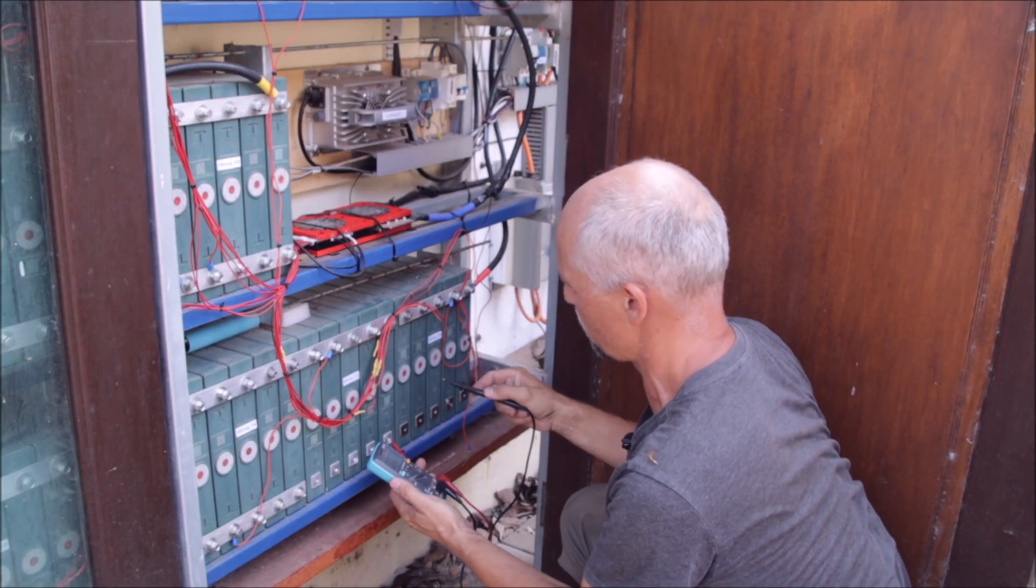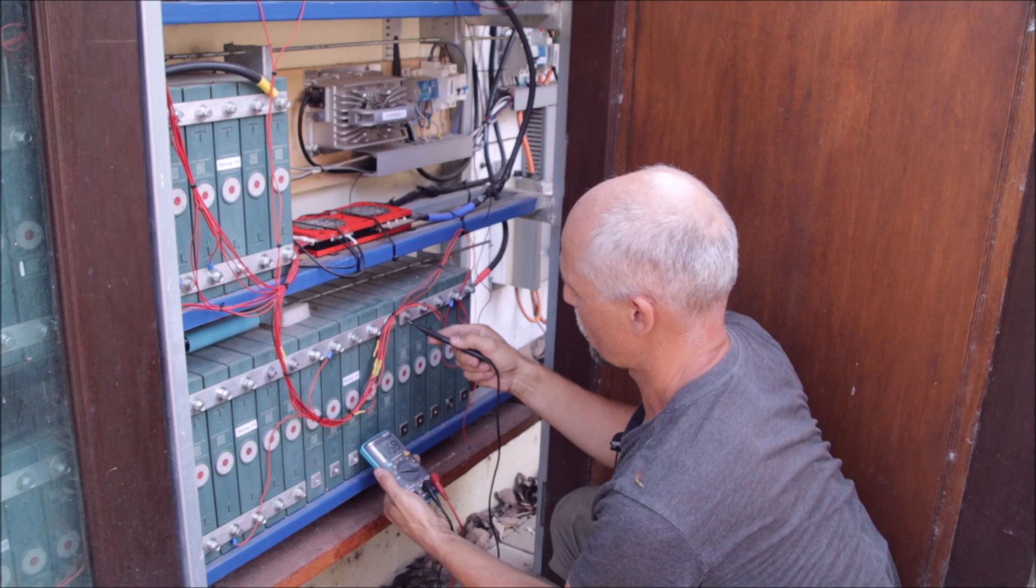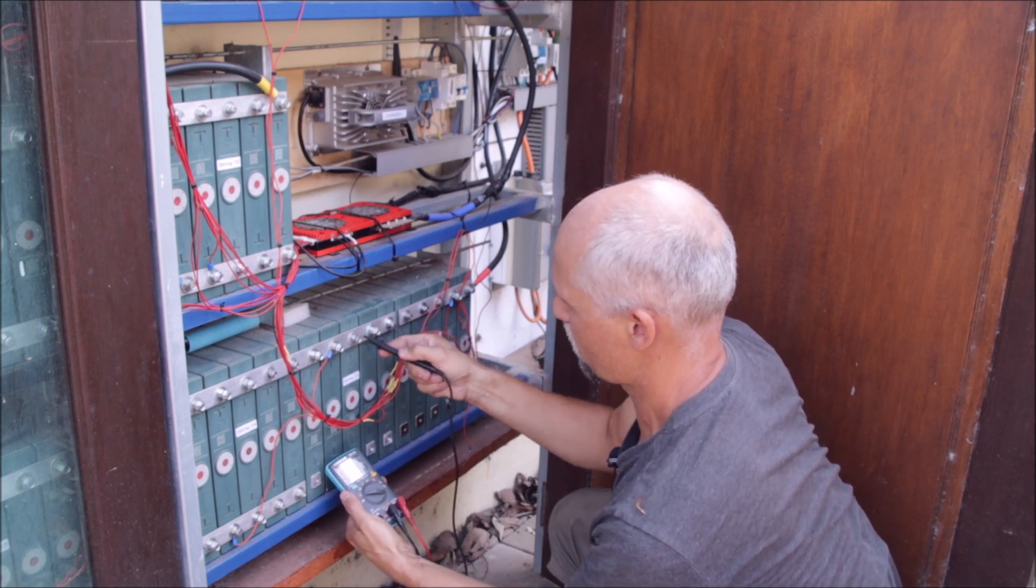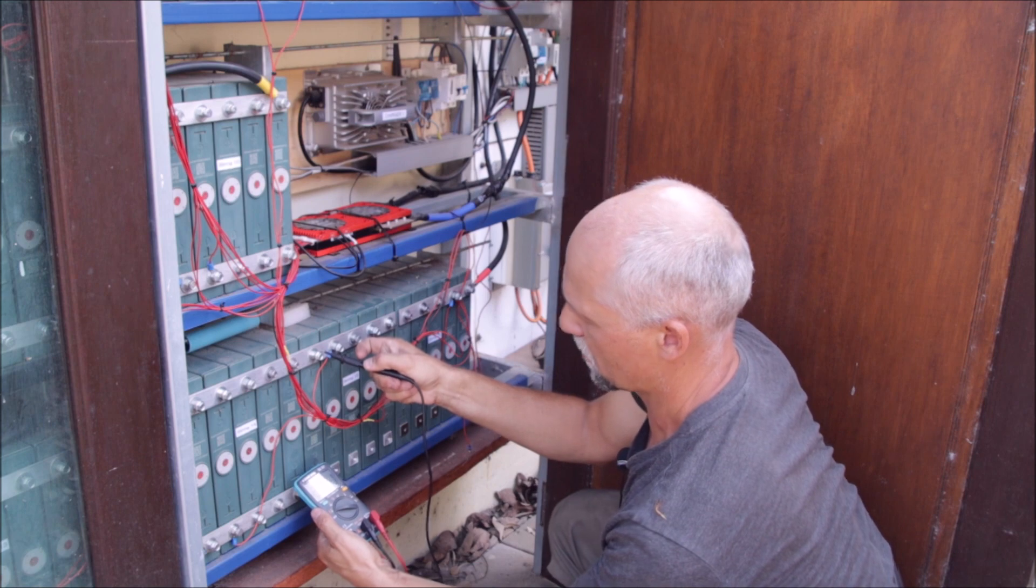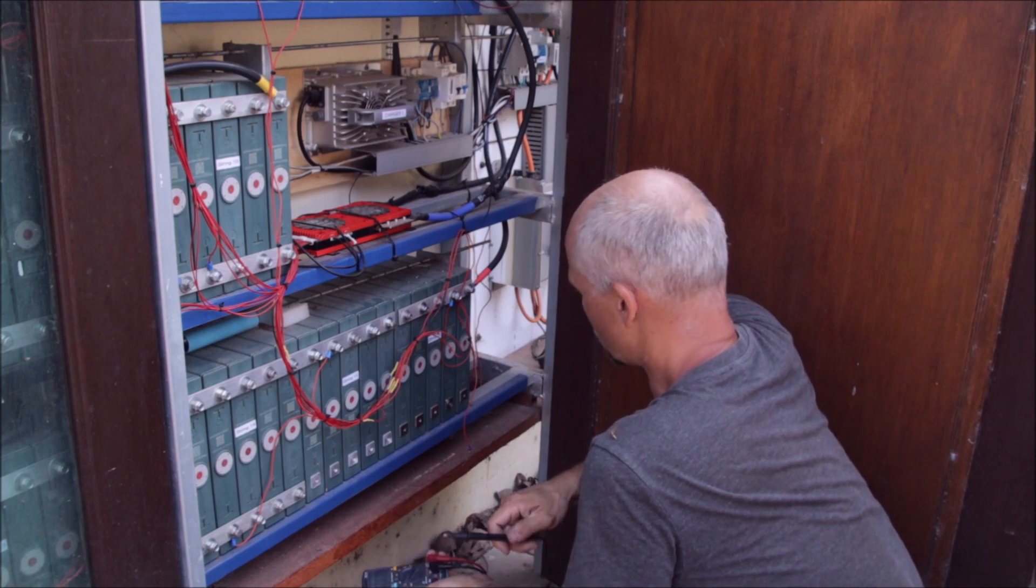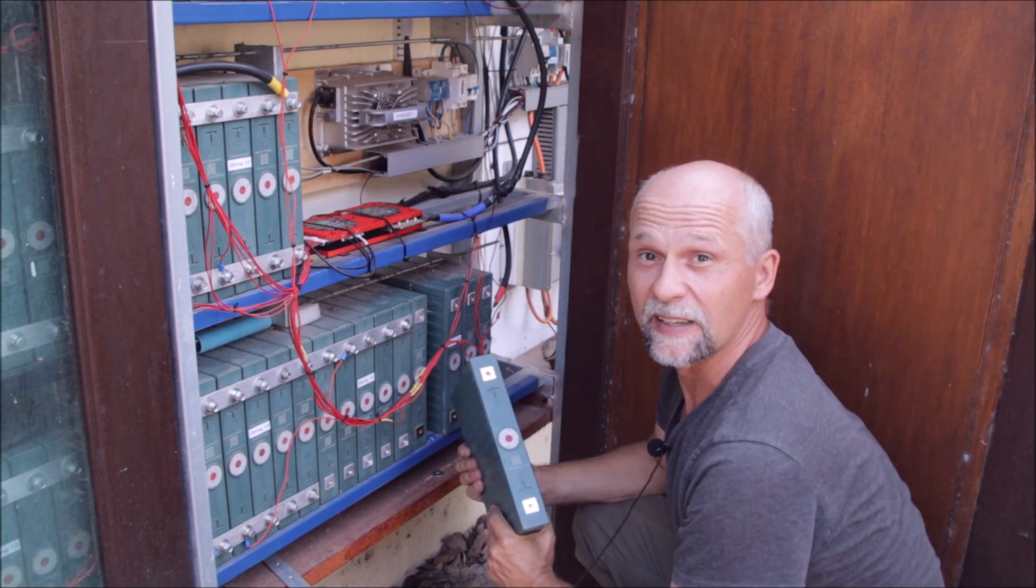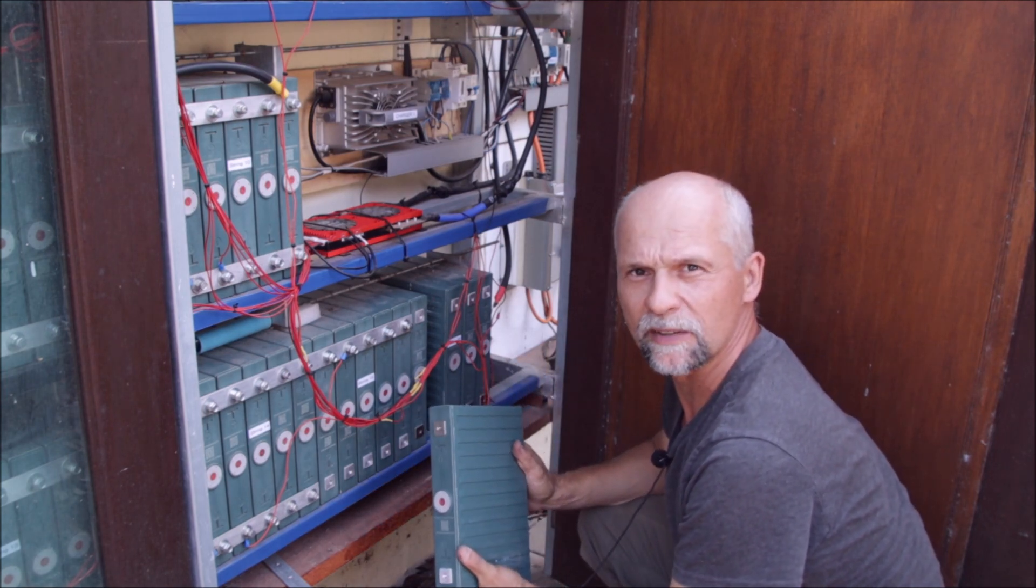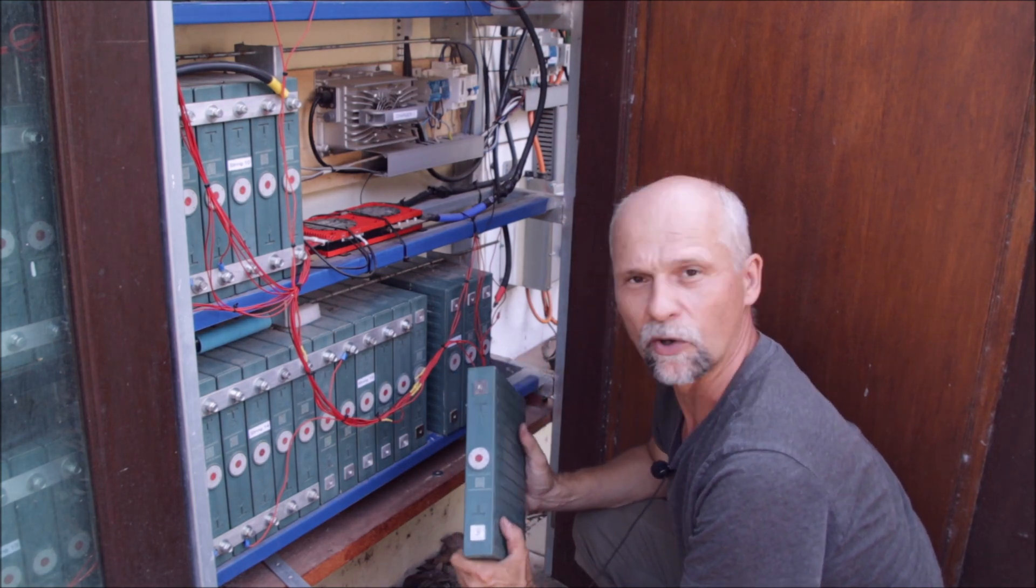Let's check string 15. 3.371, 3.372, 3.371, 3.371, 3.371. So there's nothing to see on string 15—all five cells are the same voltage. Now the cell is removed. I'll take this to the charger and top it up to 3.65 volts, fully charge it, and then also make a capacity test on this cell.